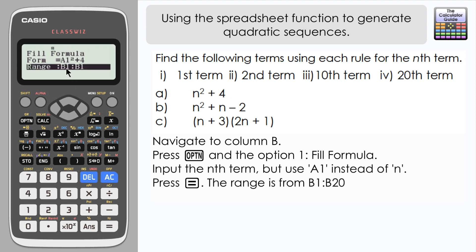And then we want the range. Well we started in cell B1 and we want to go all the way to B20, so I'm just going to change that to B20, press equals and equals to confirm.